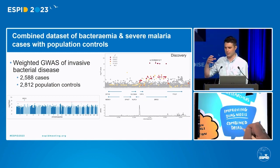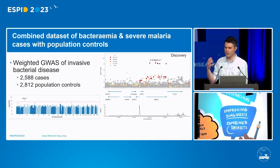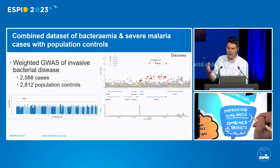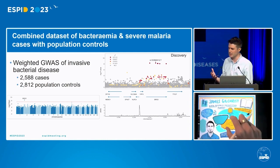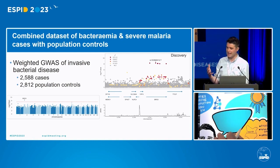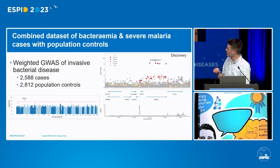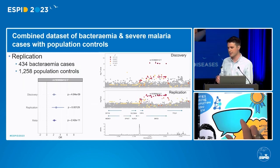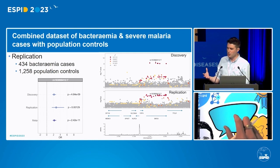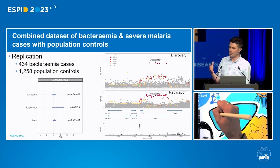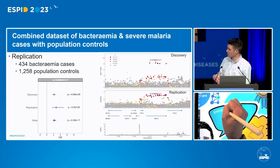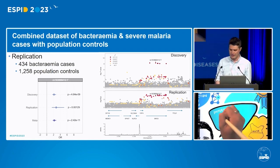Using that knowledge, we could fold together a GWAS of culture-proven bacteremia with one of severe malaria. The way we've done that is: we have shared population controls and bacteremia cases, but for our severe malaria cases, we weight them in the model according to the likelihood that they actually have culture-negative invasive bacterial disease. When you run the scan like that, you get a single genome-wide significant locus on chromosome 7, which zoomed in sits over a gene called BIRC6. And — importantly, something we weren't able to do previously — we were able to replicate that finding in an independent sample collection of culture-proven bacteremia with very stable effect sizes.